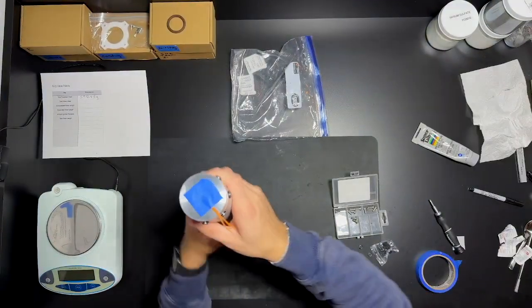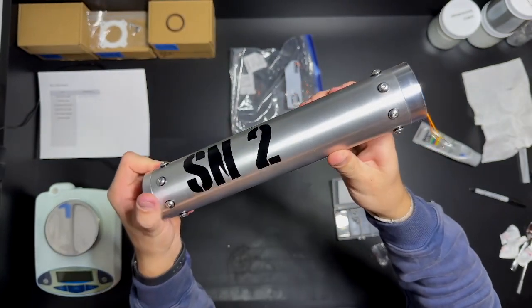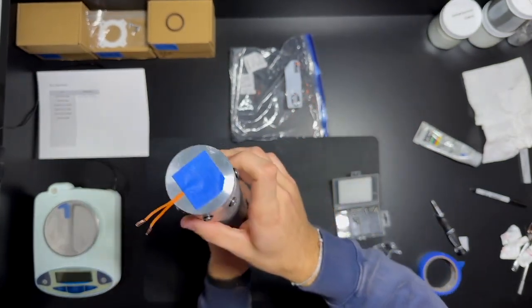And then the last step is to add some tape to prevent moisture from getting in. And there we go. You have a fully loaded rocket motor.